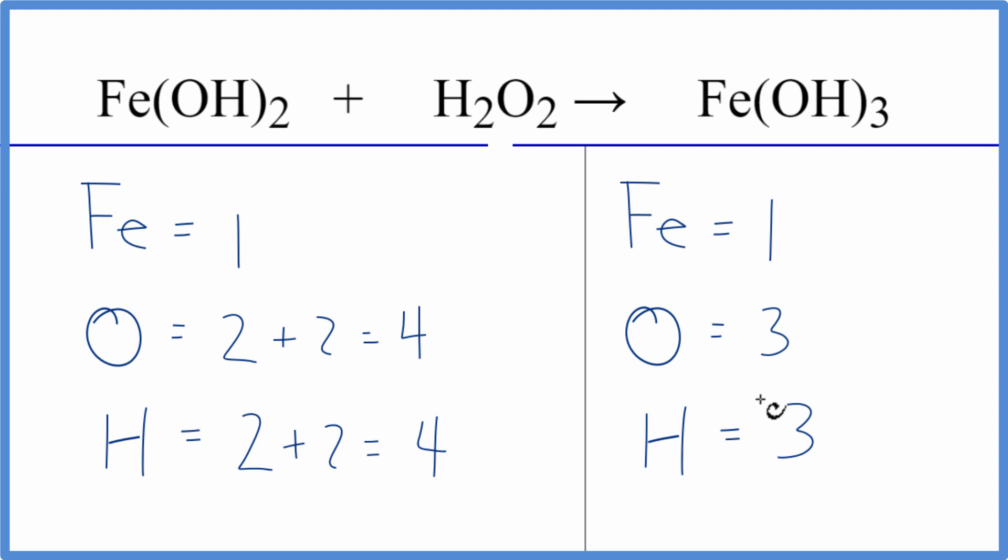Probably the best thing to do right here is to get these to be an even number. That will make it easier when we try to balance the oxygens and hydrogens on this side of the equation. So to do that, we'll put a 2 as our coefficient in front of the Fe(OH)₃, the iron 3 hydroxide.